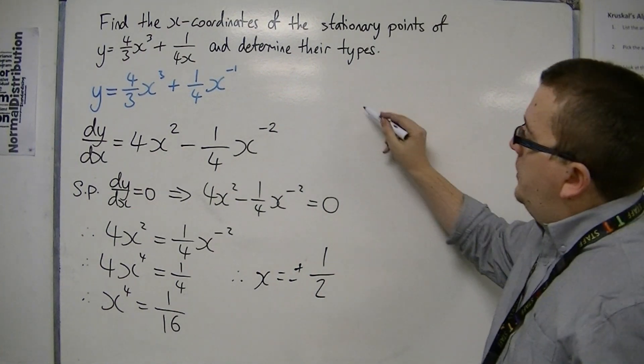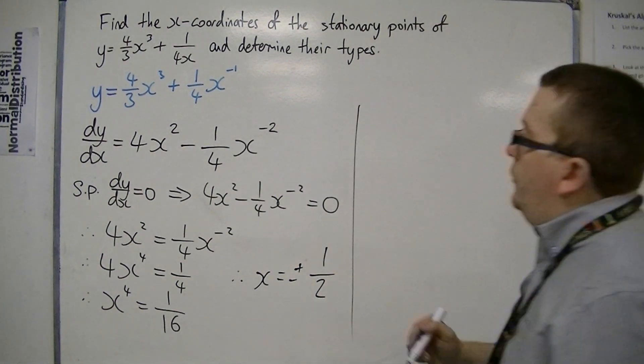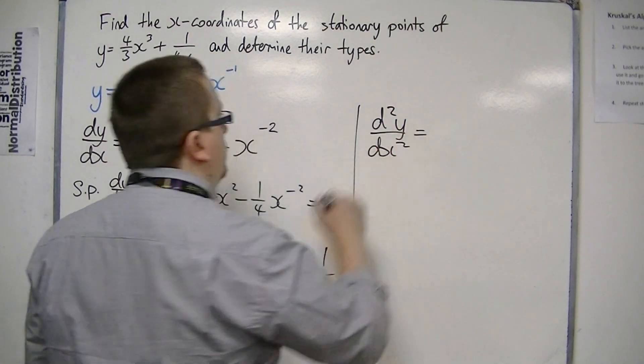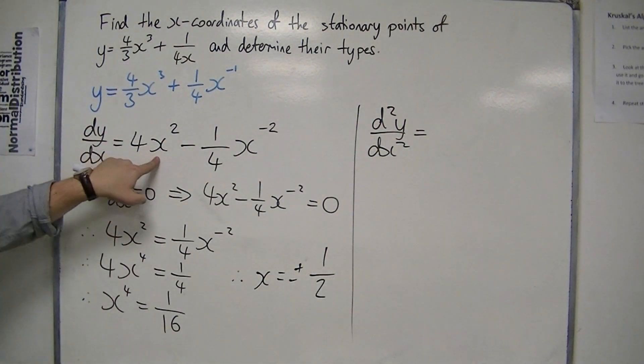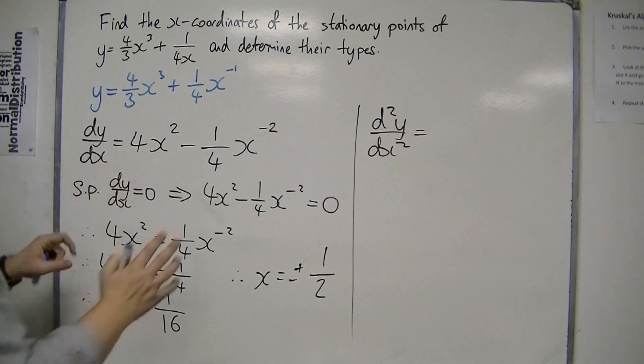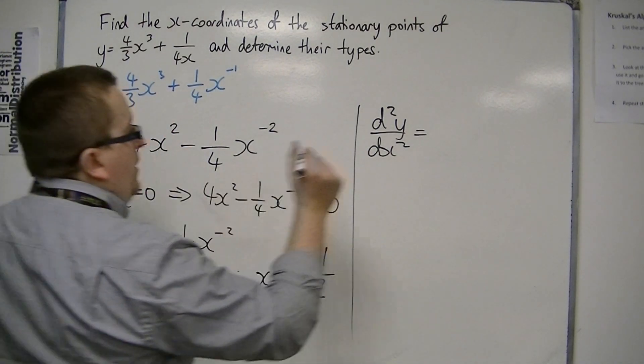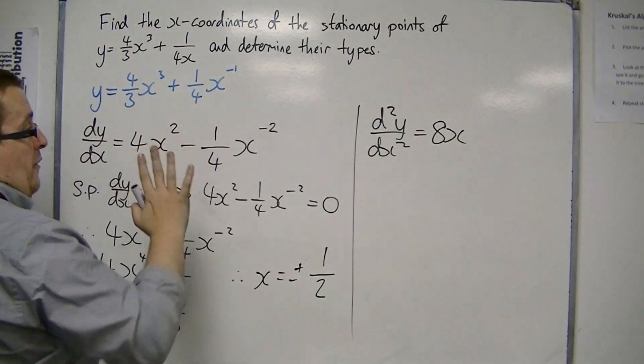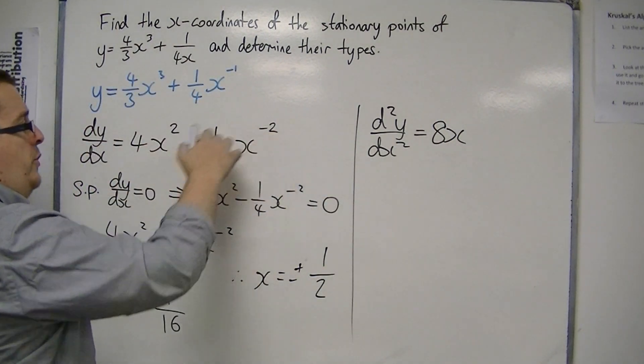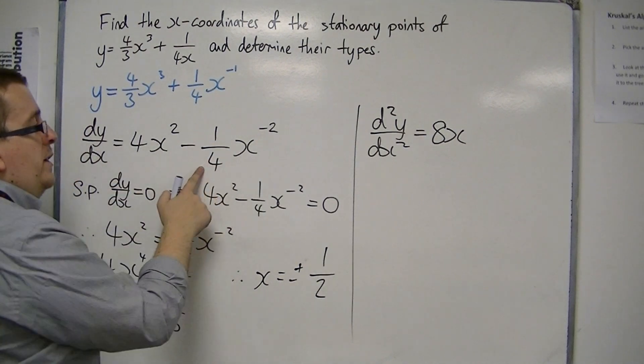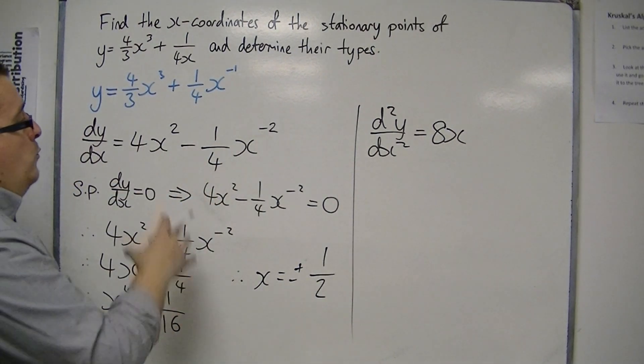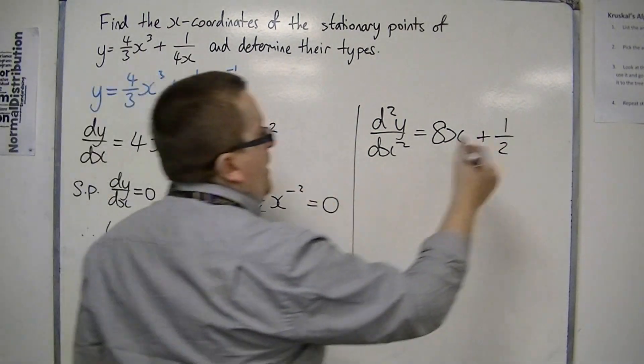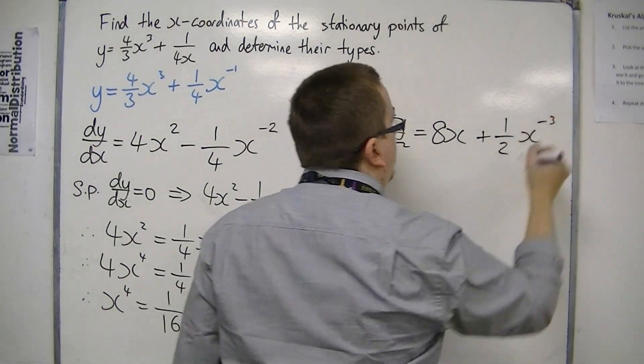I now need to determine their types, so I must find the second derivative, d²y/dx². I use the dy/dx that I already have, bring the 2 down to the front, so I now have 8x, and then taking 1 off the power, the -2 can come down to the front, multiply with the -1/4, which would make positive 1/2, and then take 1 off the power, so I've got 1/2 x⁻³.